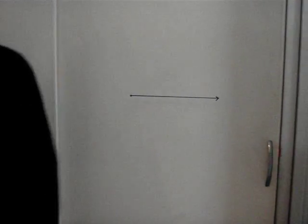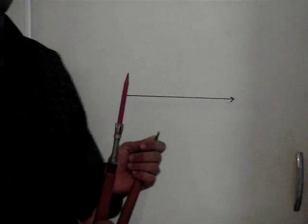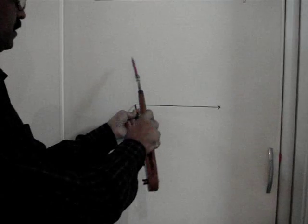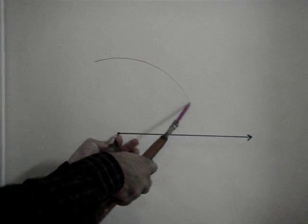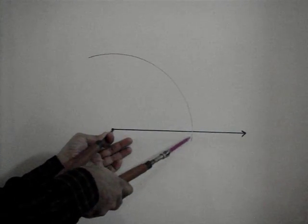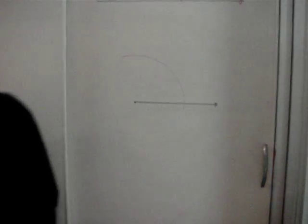Now I take the compass with some radius, keeping the nail at this end point, and draw one arc. This arc intersects the given ray at this particular point.